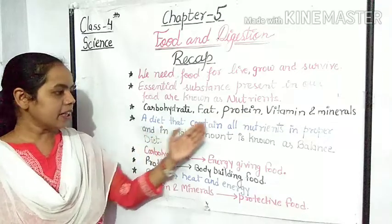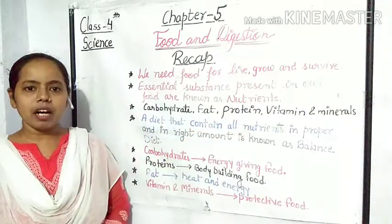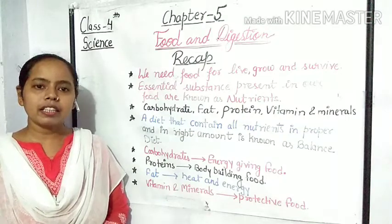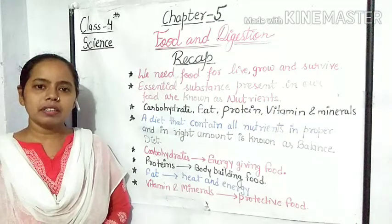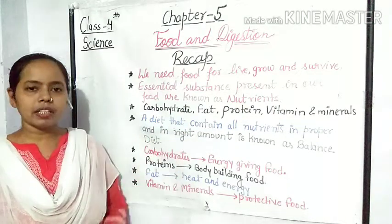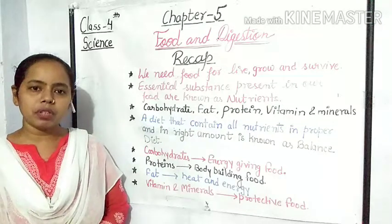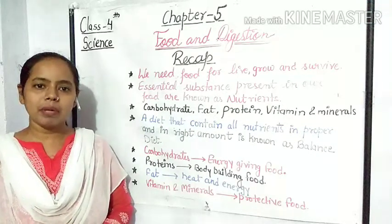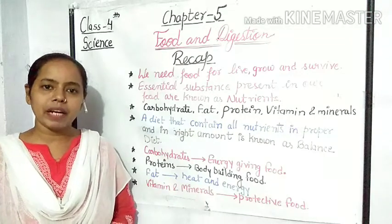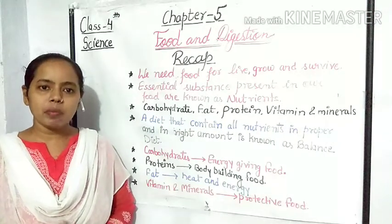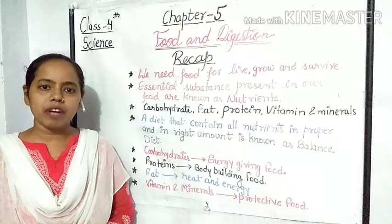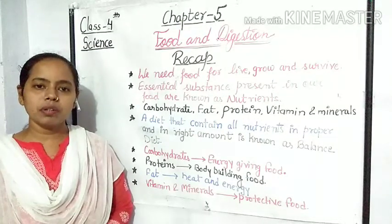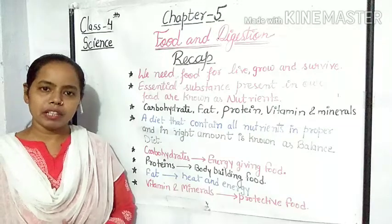A diet that contains all these nutrients in proper and right amount is known as a balanced diet. Aisi koi bhi diet, jis mein yeh sare nutrients proper and right amount mein hote hain, use hum balanced diet bolte hain. Students, hume hamesha balanced diet lena chahiye, jis mein carbohydrate bhi ho, protein bhi ho, fat bhi ho, vitamin and minerals bhi ho. Now let's know about these nutrients one by one in short.